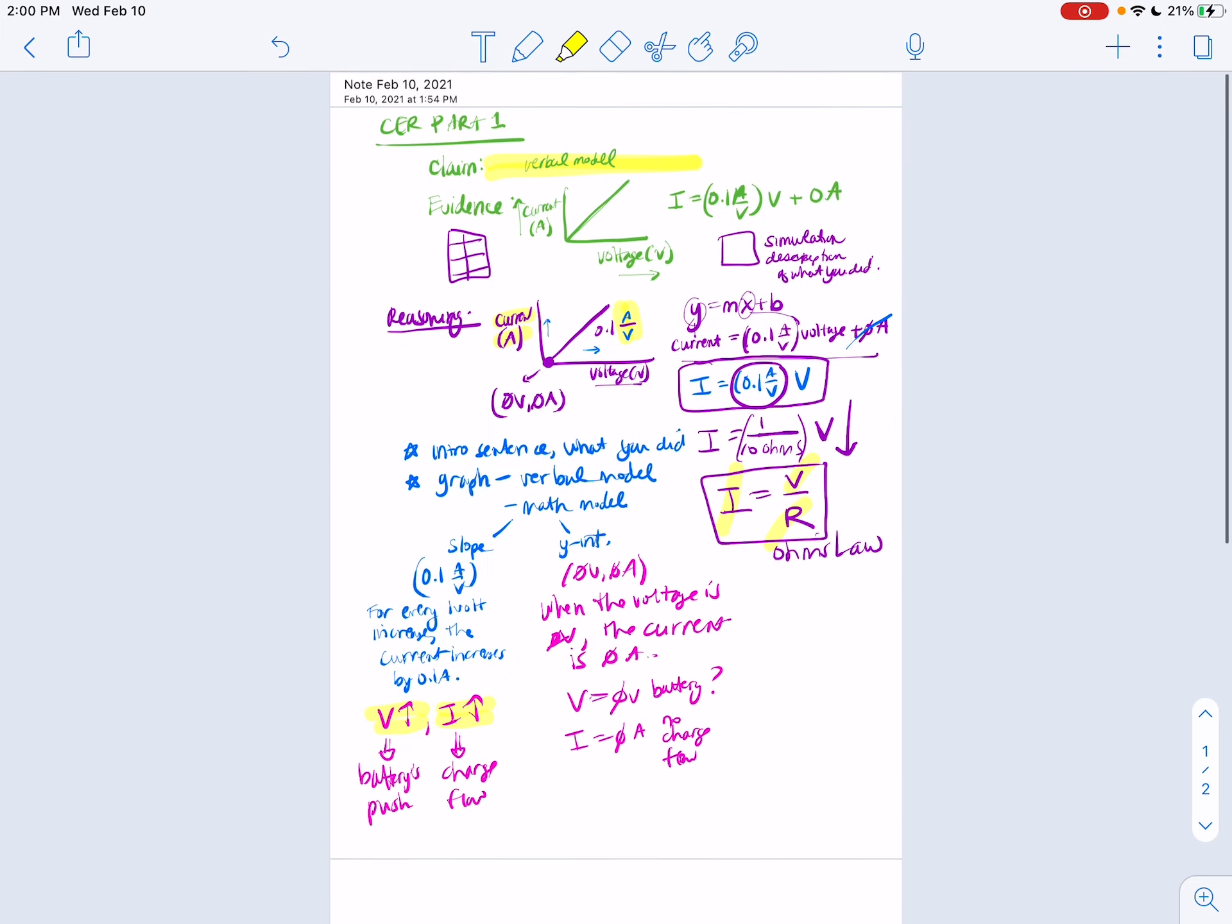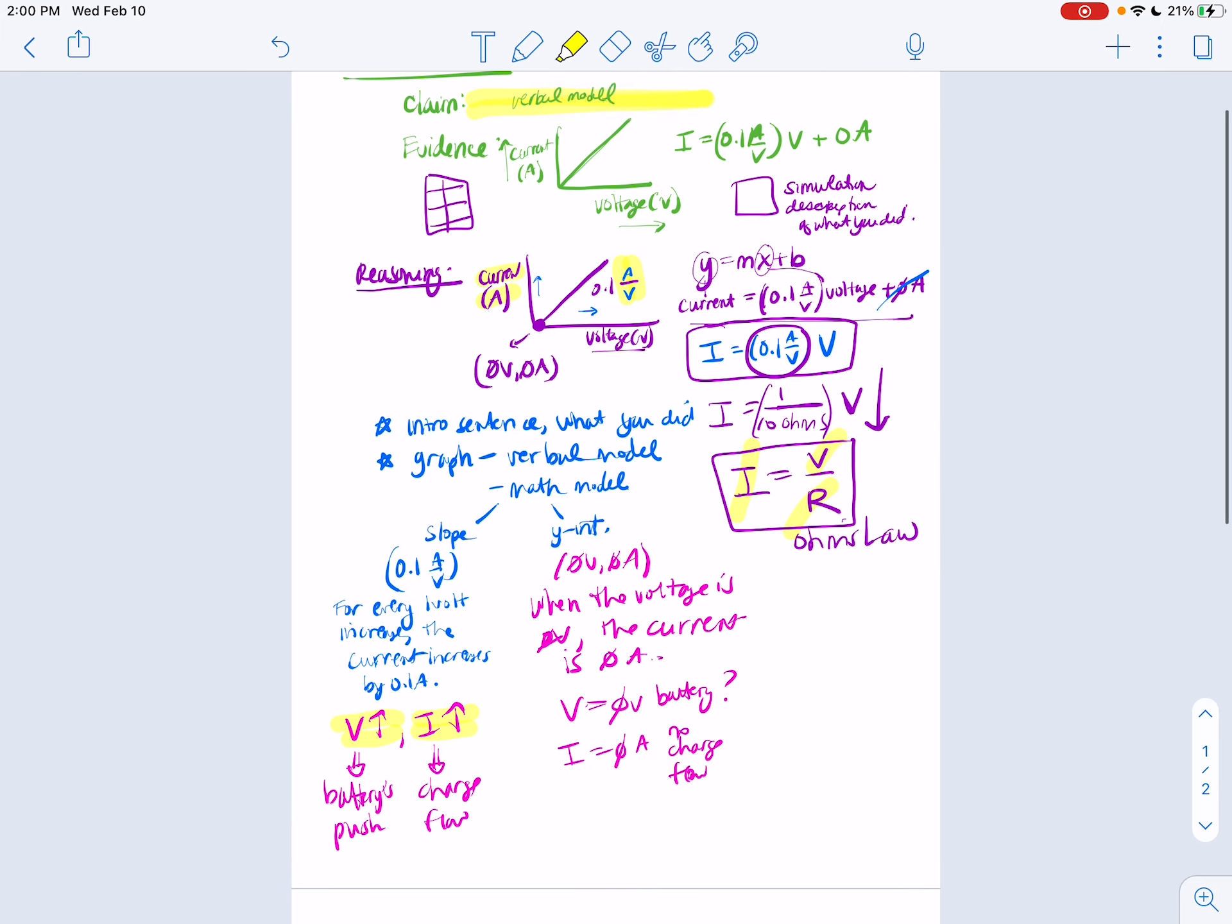So that's kind of everything I would like to see in your reasoning. Those explanations, the slope, the y-intercept, the math model, verbal model, Ohm's Law. And then this information here where you're explaining the slope and the y-intercept. That's what I want to see.